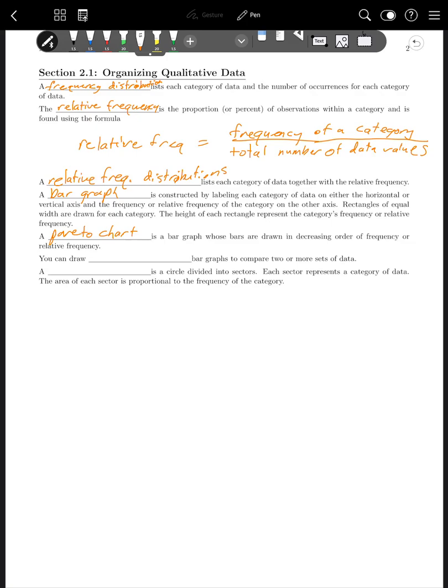A bar graph is constructed by labeling each category of data on either the horizontal or vertical axis and the frequency or relative frequency of the category on the other axis. Rectangles of equal width are drawn for each category. The height of each rectangle represents the category's frequency or relative frequency. A Pareto chart is a bar graph whose bars are drawn in descending order of frequency or relative frequency, going from the category with the largest number of data values down to the category with the smallest number.